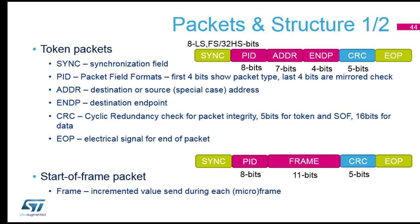Another packet type is the start-of-frame packet. This is a special one sent on the network regularly by the host, just to do the timing. For full speed and low speed, the start-of-frame packet comes every one millisecond — always. If you miss it, if it's not sent for three milliseconds, that means the host is sleeping. When you use a USB analyzer, you typically remove start-of-frame packets because they come very frequently. In high speed, it's a micro-frame every 125 microseconds.